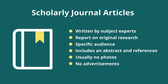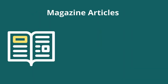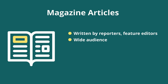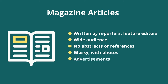Another clue is that journal articles are often more than five pages long. In contrast, let's take a quick look at magazine articles. These are usually written by reporters or feature editors who may not be experts on the subject they're writing about. The articles are focused towards a general audience and use common language choices. They do not have an abstract or a list of references. The final detail that always indicates popular magazine articles are the glossy photographs and, of course, advertising.